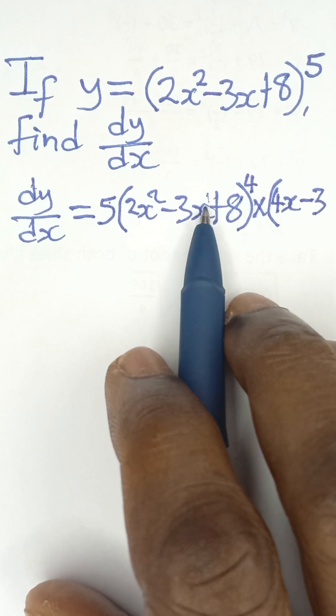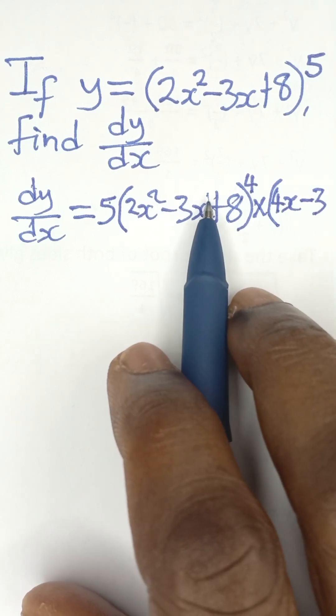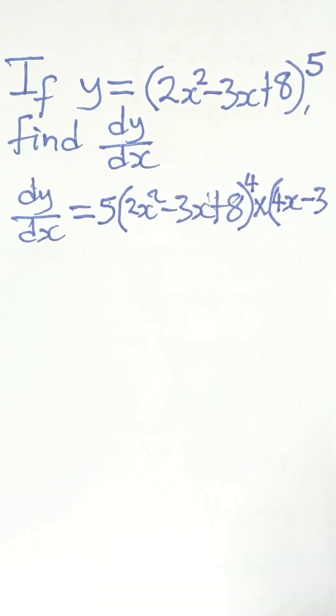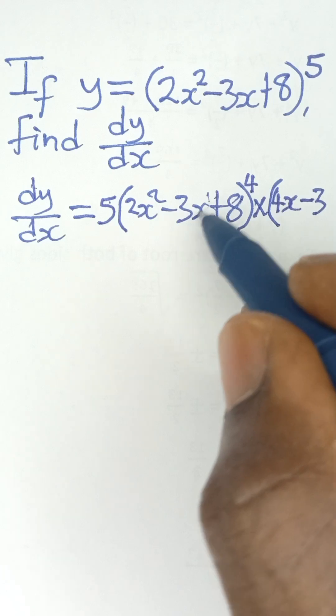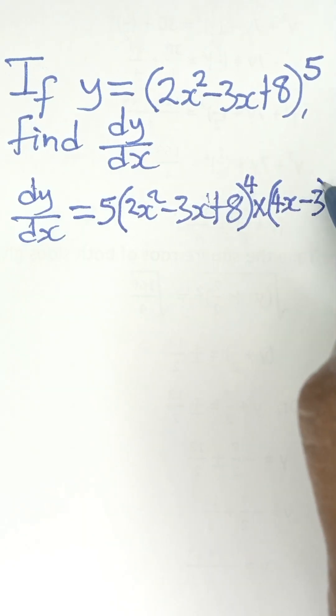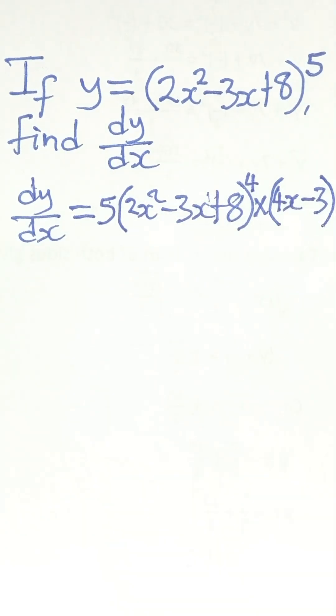And then x here becomes x raised to the power of 0 when you subtract 1 from the power, and that becomes 1, which is because x raised to the power of 0 becomes 1. So we are left with minus 3 on this side.